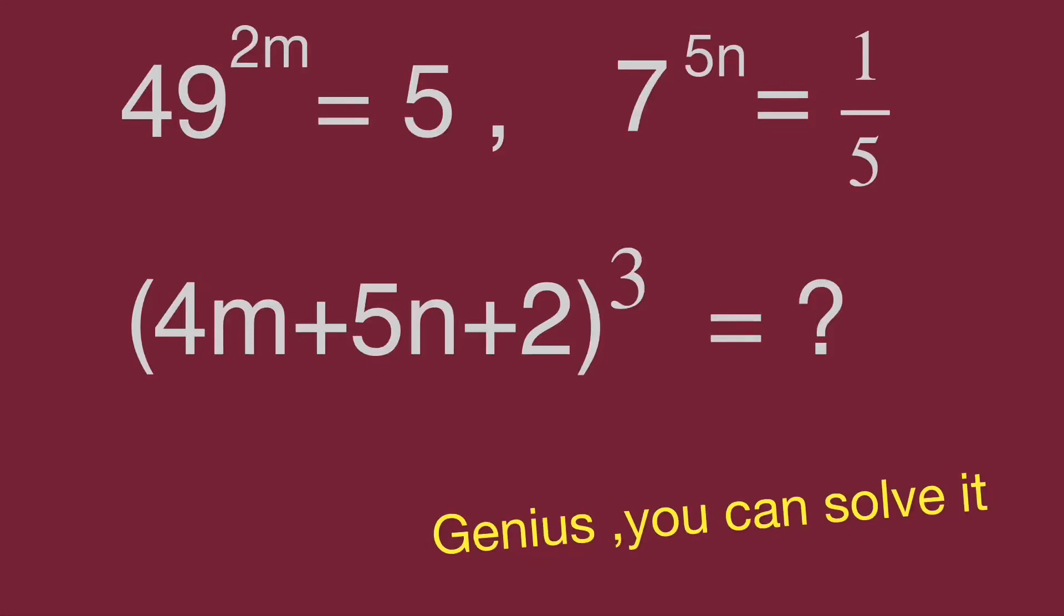Hello, here is mathematics training for class 7 students. 49 to the power of 2m equals 5, 7 to the power of 5n equals 1 over 5. Find the value for bracket 4m plus 5n plus 2 cube.